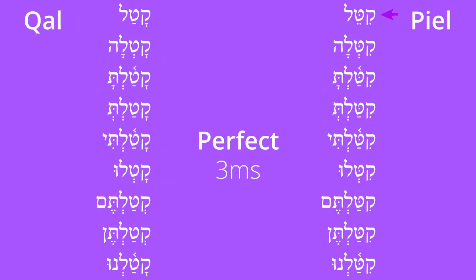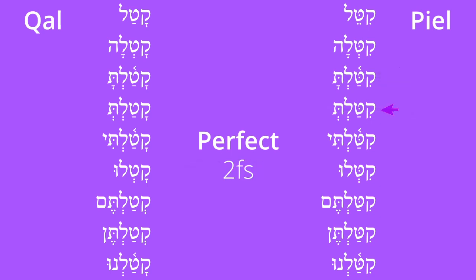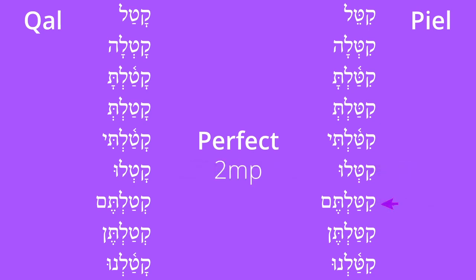Now let's compare Qal with PL, starting with the perfect: katal vs. keitel; katla vs. kittla; katlta vs. kittla; katalt vs. kittalt; katalti vs. kitalti; katlu vs. kitlu; kitaltem vs. kitalten; kitelnu vs. kitelnu. The difference is in the hirik plus the dagesh.